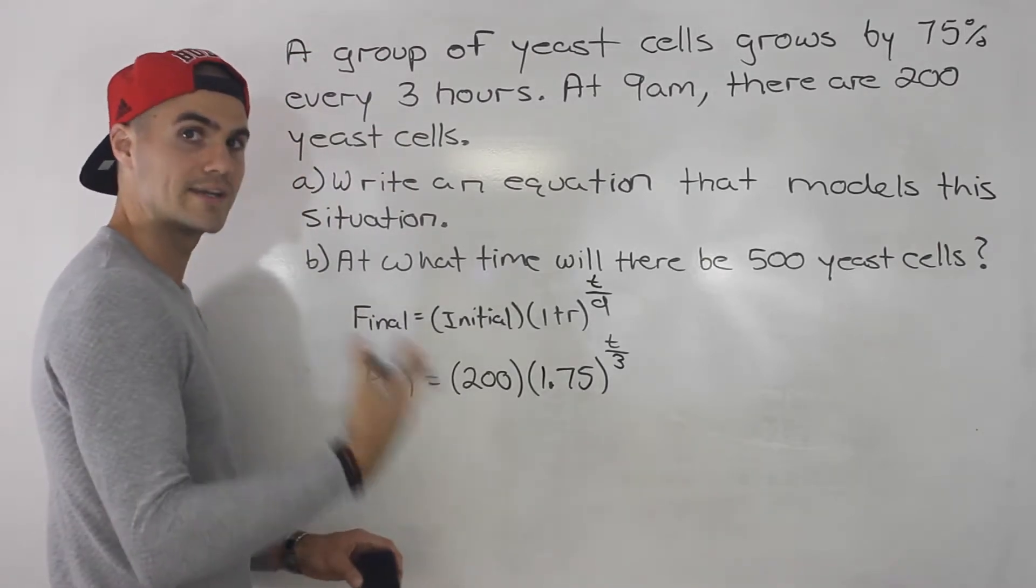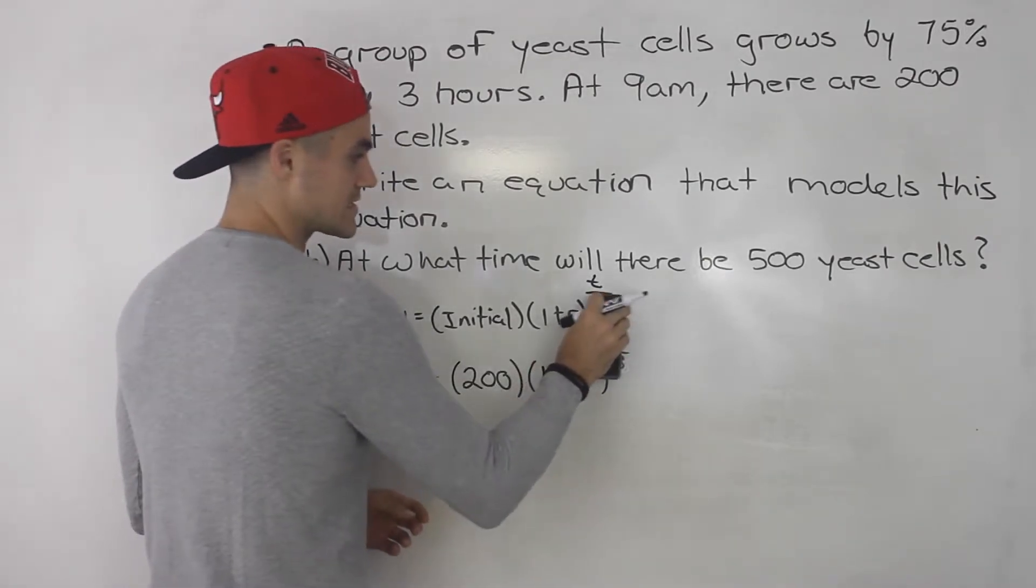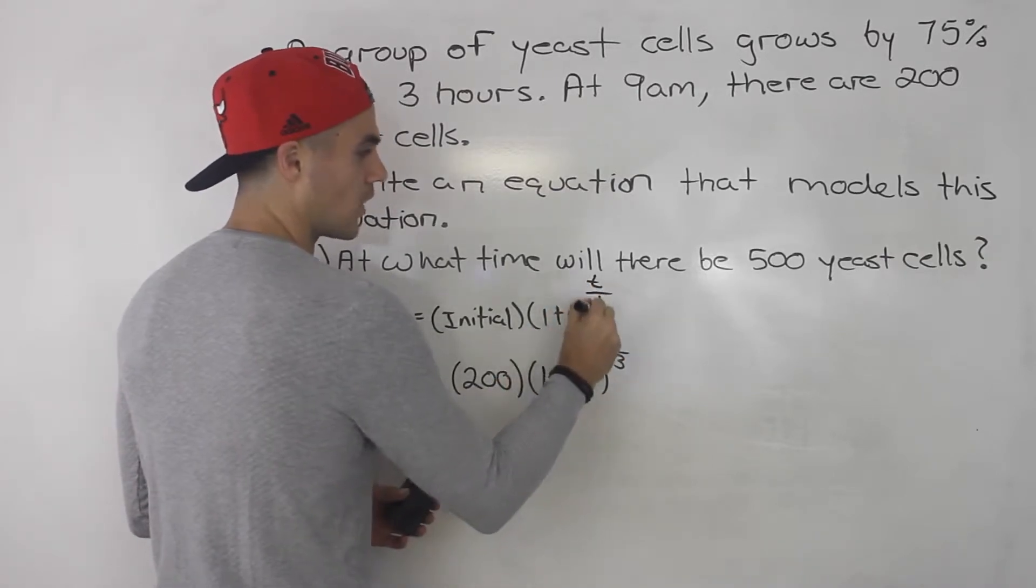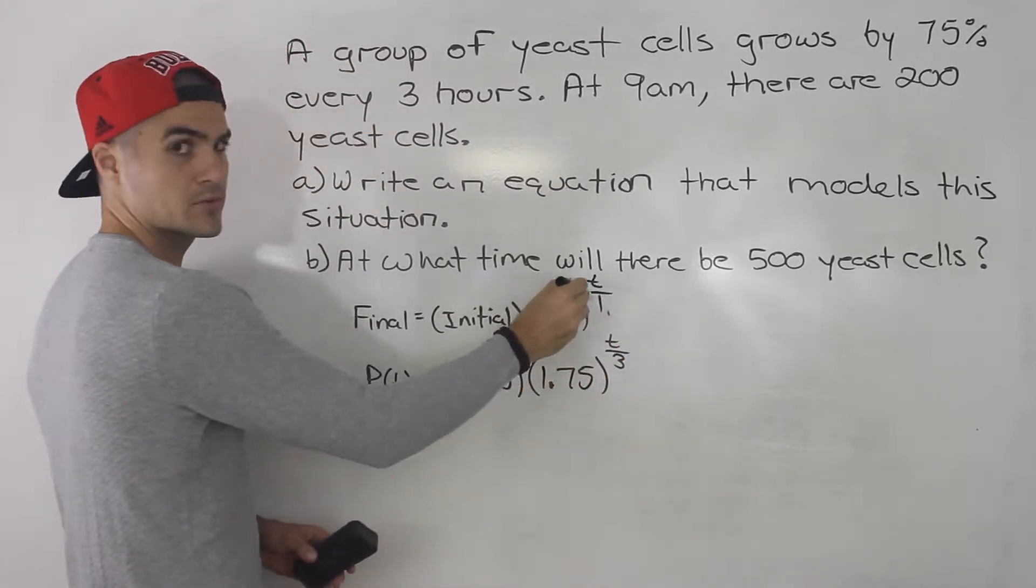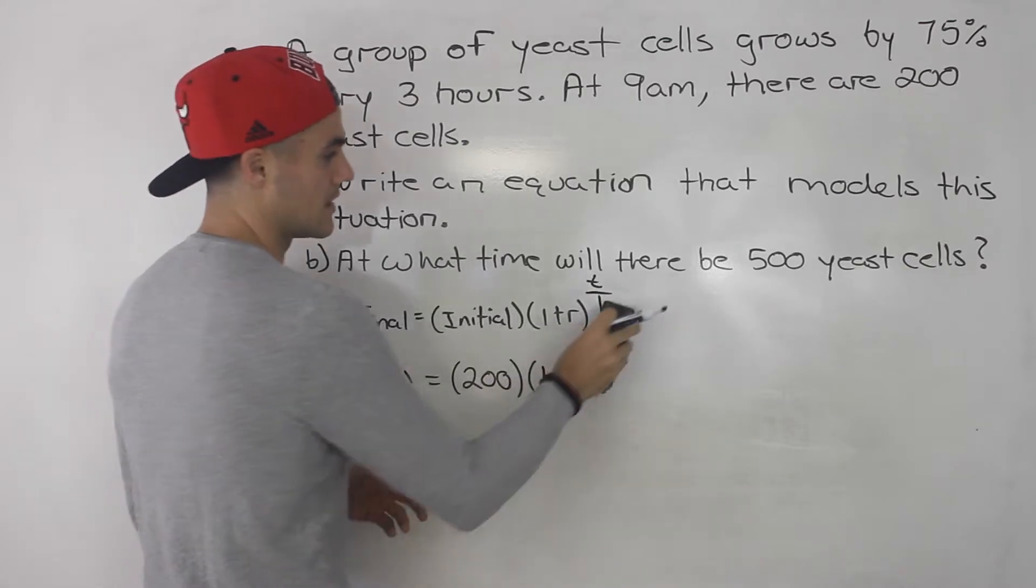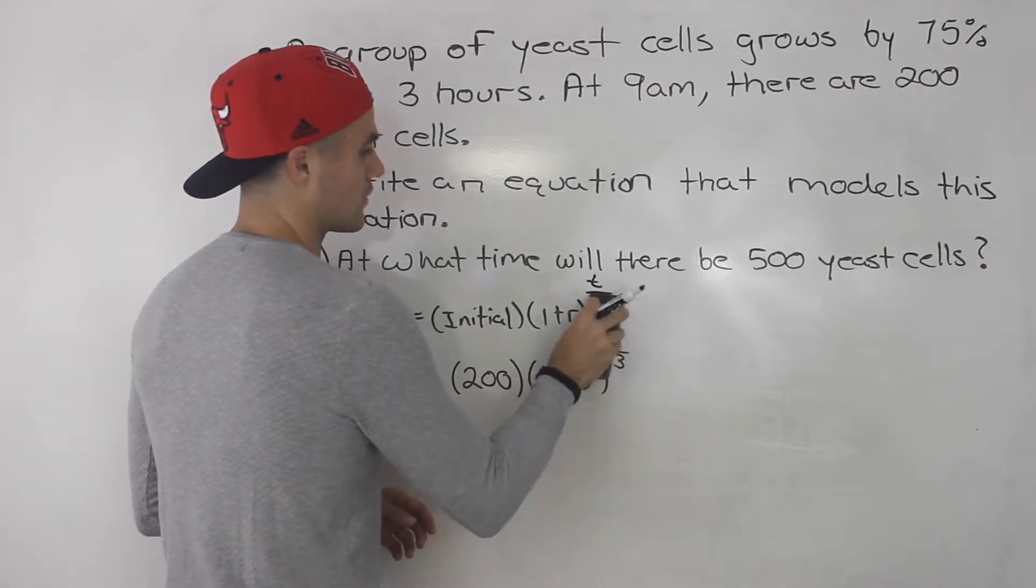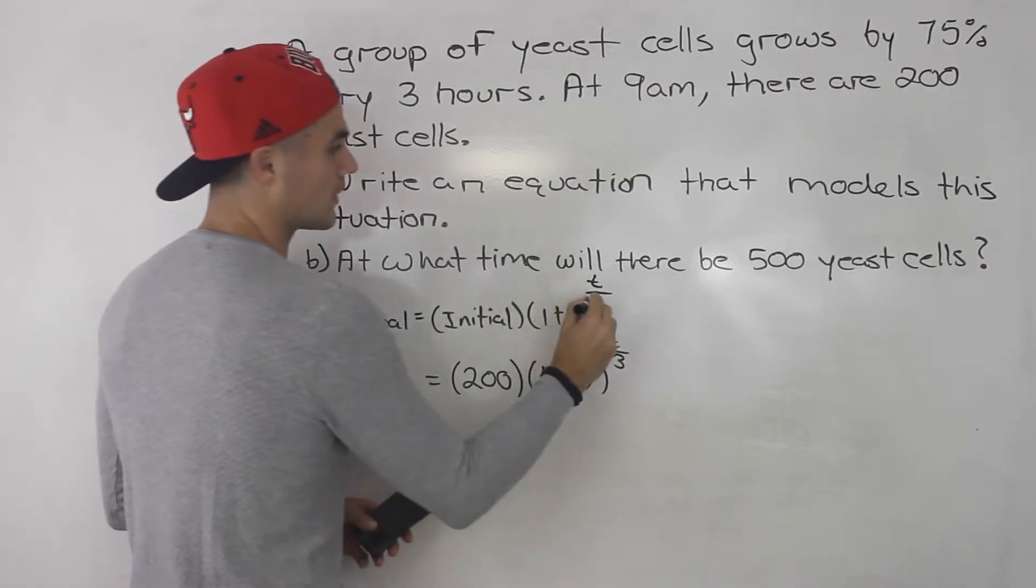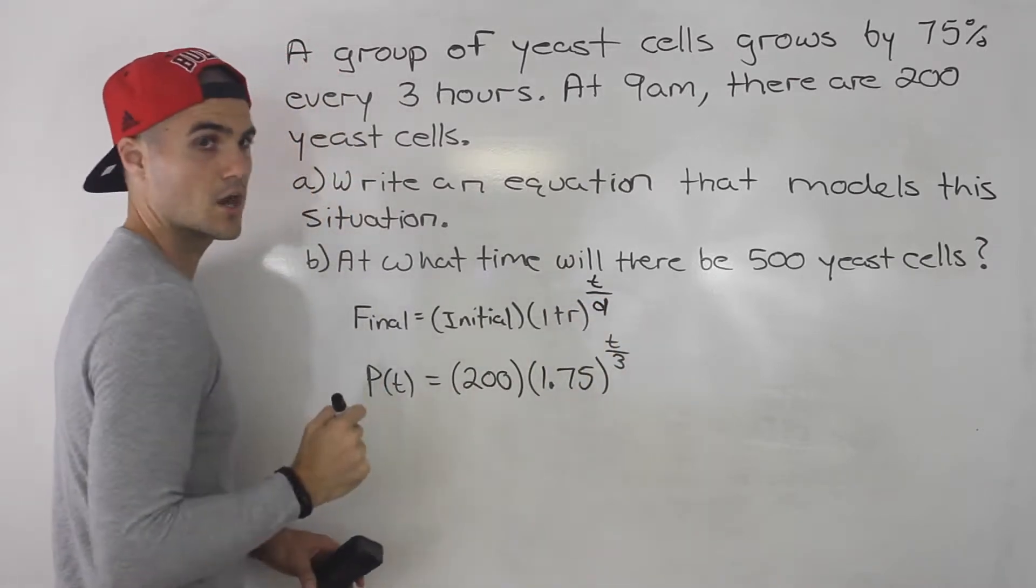So whenever they say every hour, every day, every minute, this denominator is always 1, so we don't have to put the 1 there. t over 1 is just t. But whenever they have something other than 1, there's going to be a denominator there.